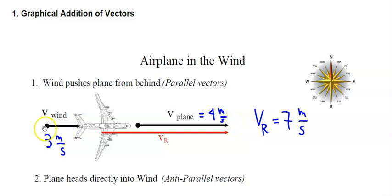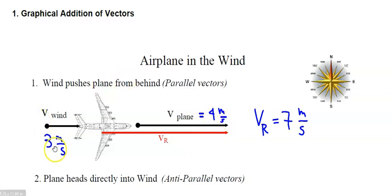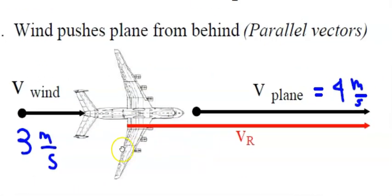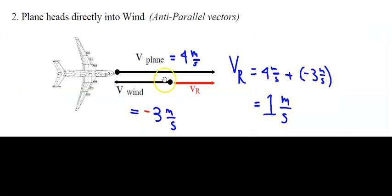If the plane is moving to the right at four meters per second and the wind is pushing to the right at three meters per second, four plus three equals seven. Velocity is the speed of the plane in the direction it's headed. The plane is traveling east at four meters per second, and the wind is pushing from behind at three meters per second east. Since east is defined as a positive direction, four plus three equals seven meters per second east. This red vector represents the sum of the wind and the plane.